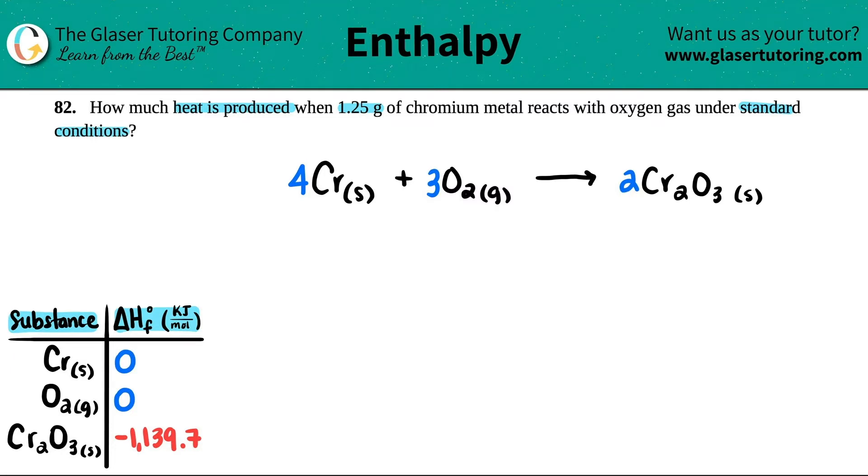The next thing we're going to do is list out our delta H values from the appendix, the standard states. Chromium: zero, no bonds, so no heat to form it. Oxygen diatomics: they're all zero, takes no heat to form these. And then for Cr2O3, it's negative 1139.7.